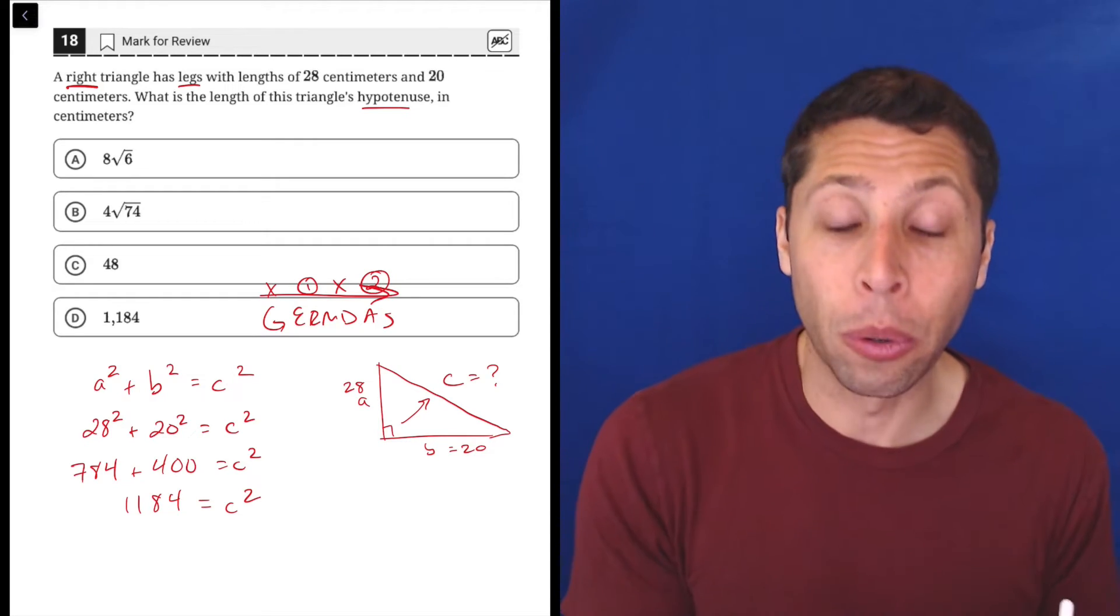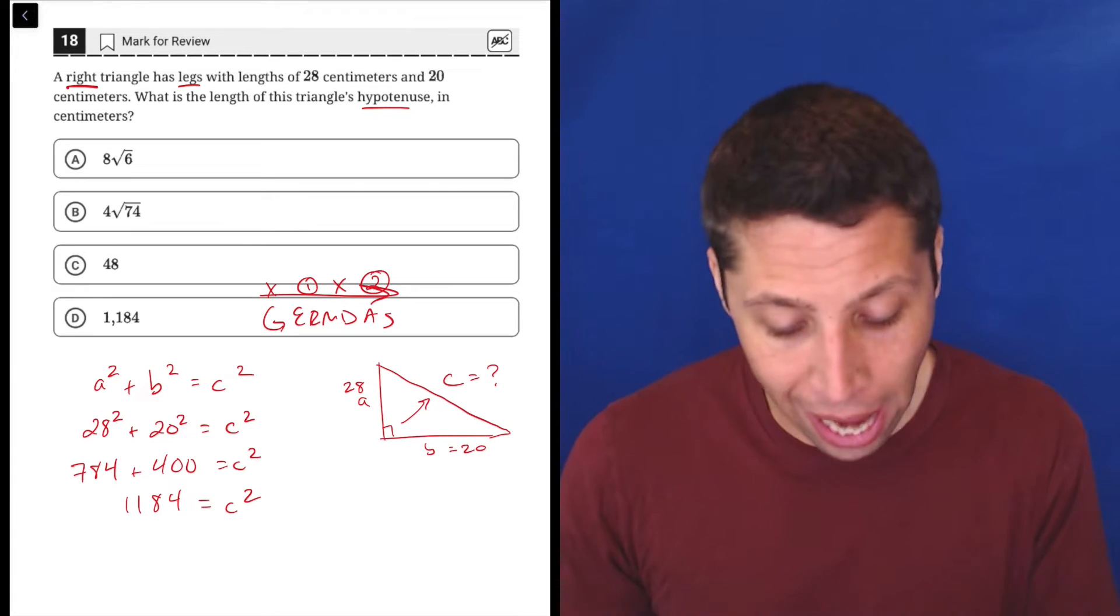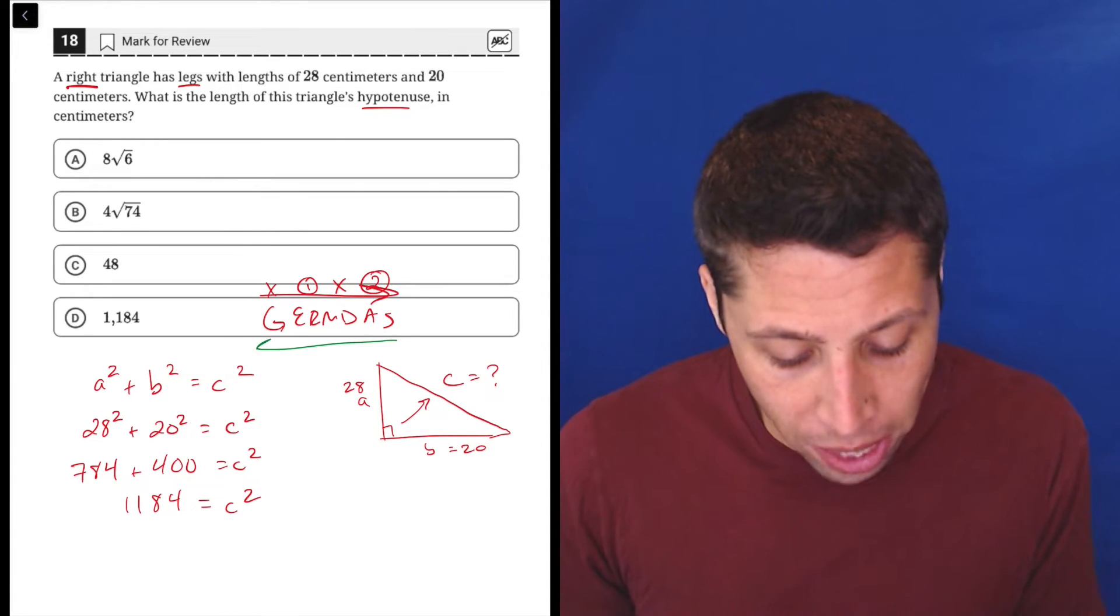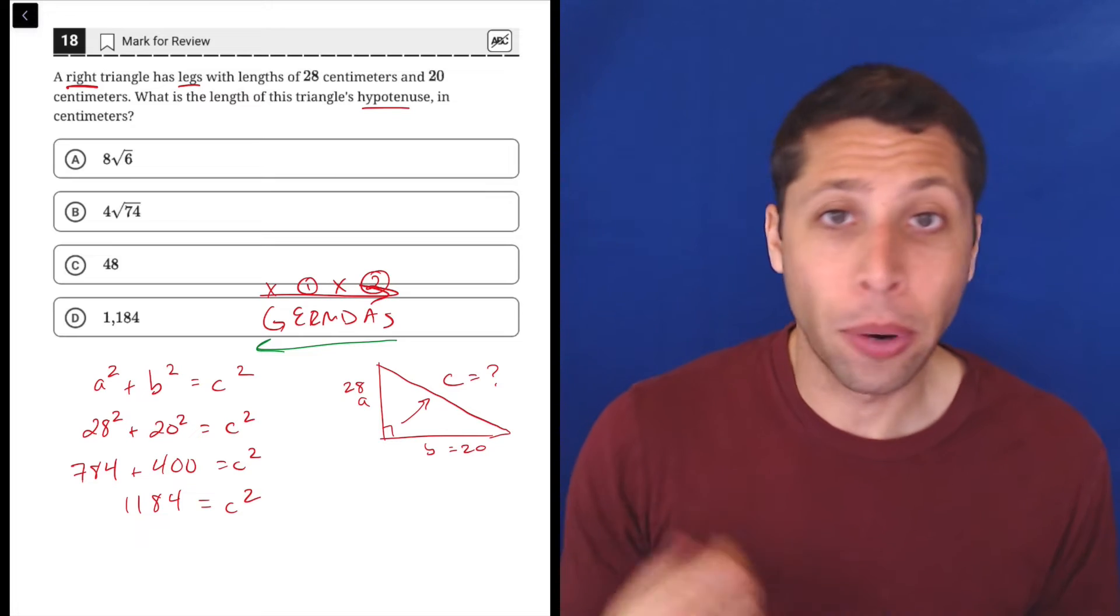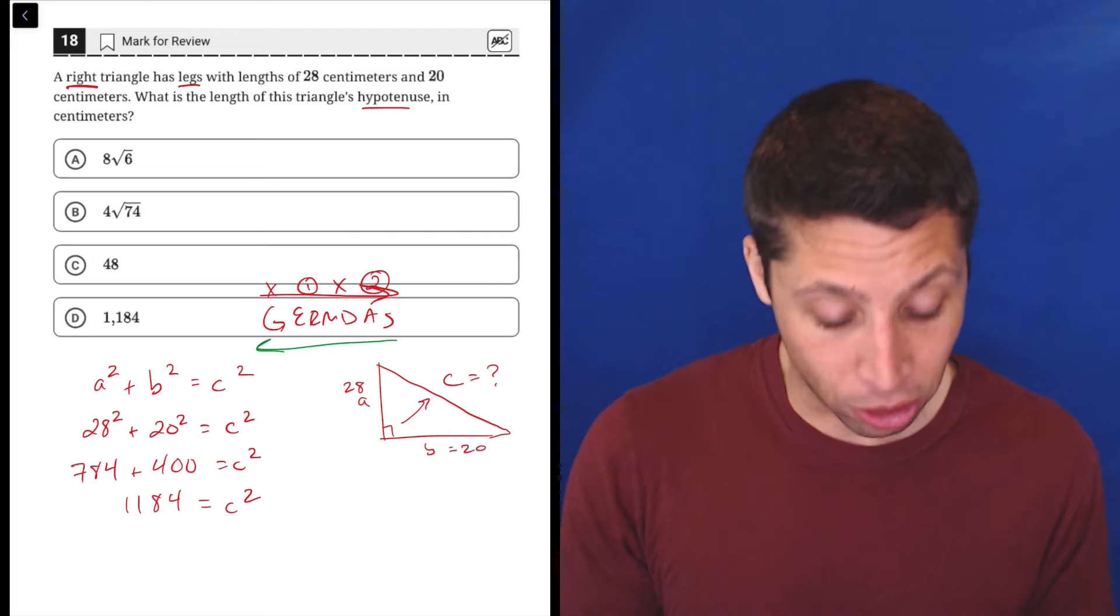We don't have what C is equal to, but we also can't simplify things any further. So this is where algebra takes over. So what we're going to do now is we're going to get C alone, and we're going to do that by kind of just canceling out whatever's attached to it. So luckily it's a very simple equation.